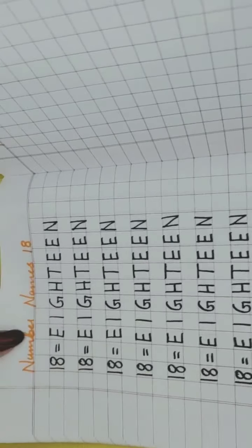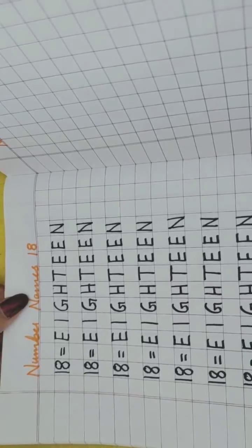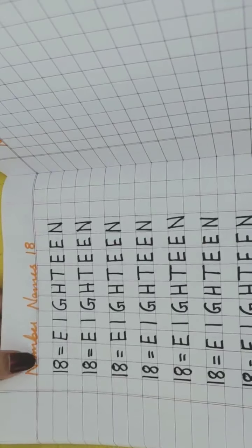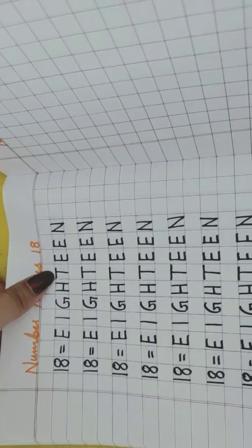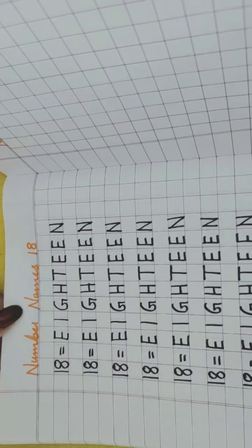Very good. See, we have learned the number names of 18, right? See, E, I, G, H, T, E, E, N. 18.